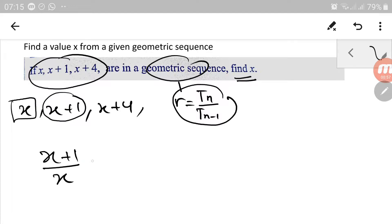So this one is also equal to this one. This term, x plus 4, divided by the term before it, x plus 1.